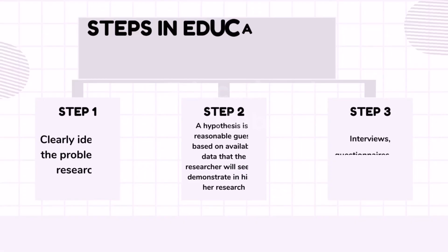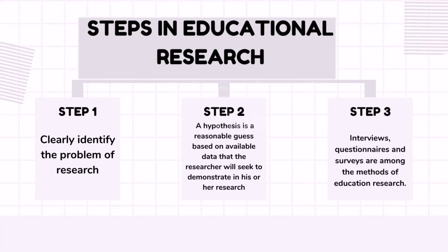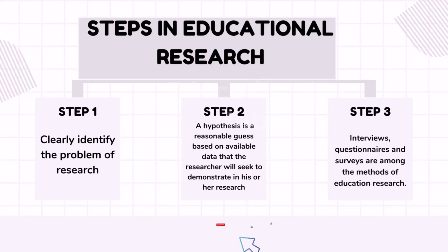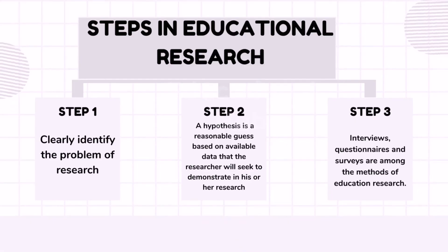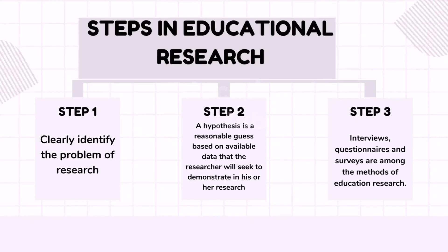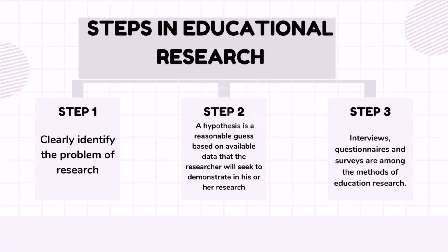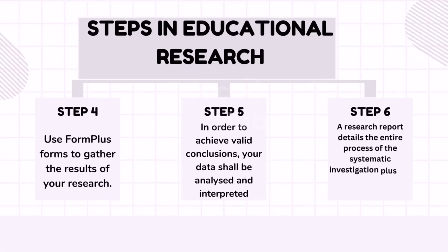Steps in educational research. Education research, like any type of research, has its own set of steps. These steps allow for objective information to be obtained and valid conclusions drawn from it, which are useful in the research context. First, clearly identify the problem of research. Second, figure out how you think it will work. A hypothesis is a reasonable guess based on available data that the researcher will seek to demonstrate in their research. Third, specify the methodology to be adopted. Interviews, questionnaires and surveys are among the methods of education research. Fourth, use one or more learning research methods to collect data from the subjects.